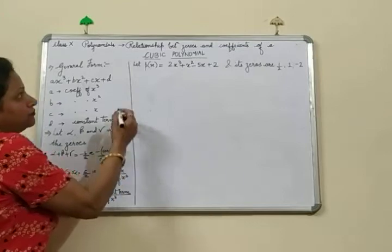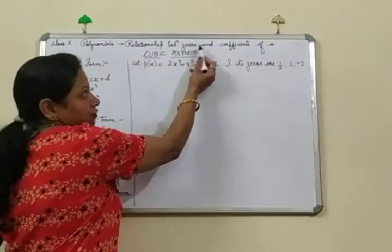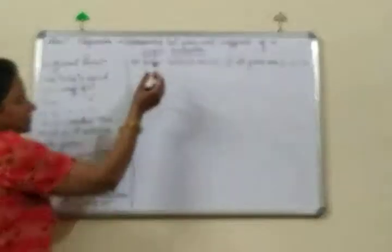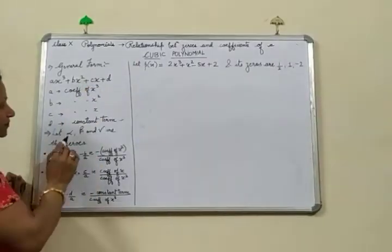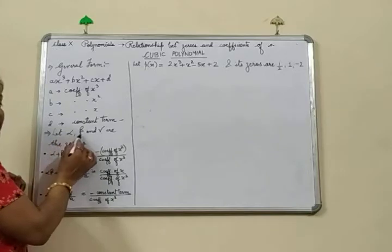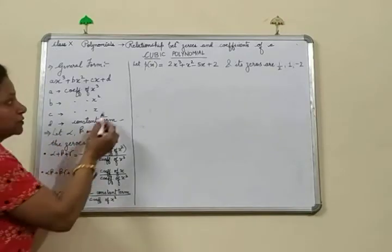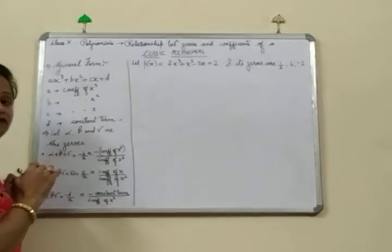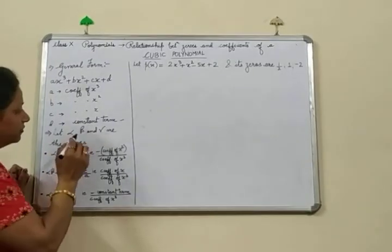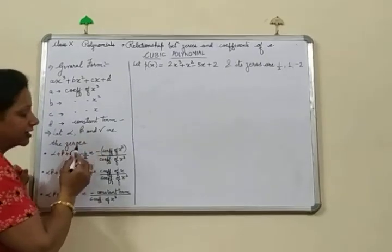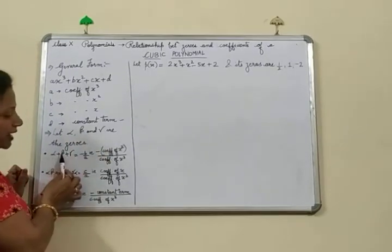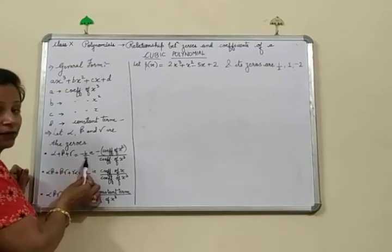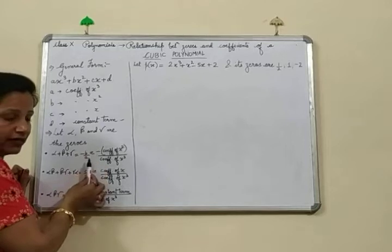We have to verify the relationship between zeros and the coefficients. Let alpha, beta, and gamma be the zeros of this cubic polynomial. If we need the sum of all the zeros, that means alpha plus beta plus gamma, this is equal to minus b upon a.